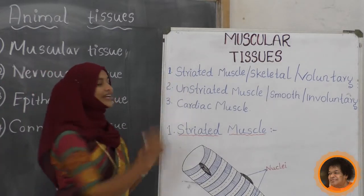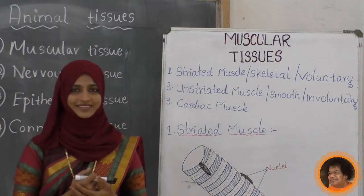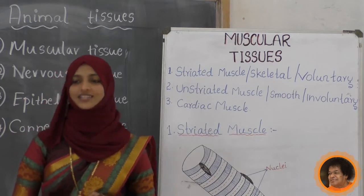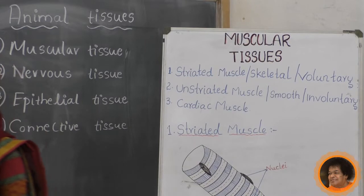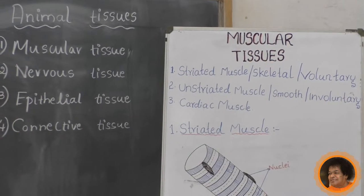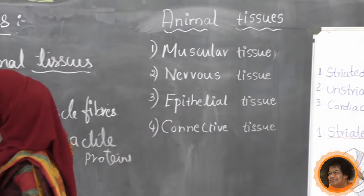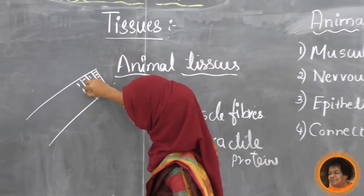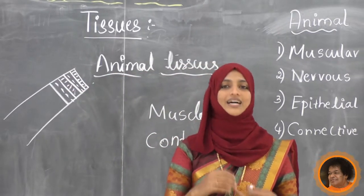Before that - striated means what? What is the meaning of striated? It is having striations. What are striations? Striations means it has bands - light and dark bands. I will draw here. If it is a muscle tissue, it has bands in it - some bands are dark, some are very light. Alternatively, it has dark and light bands.